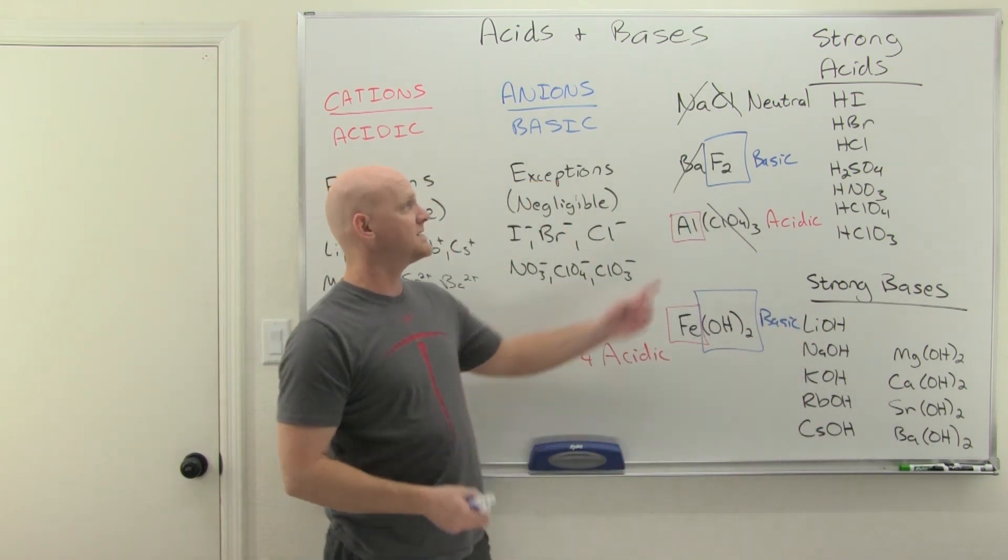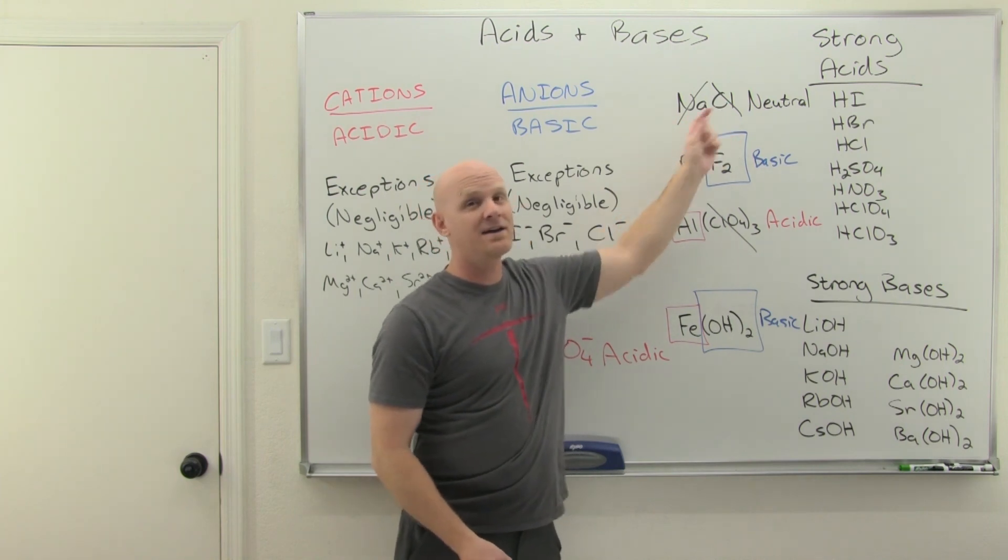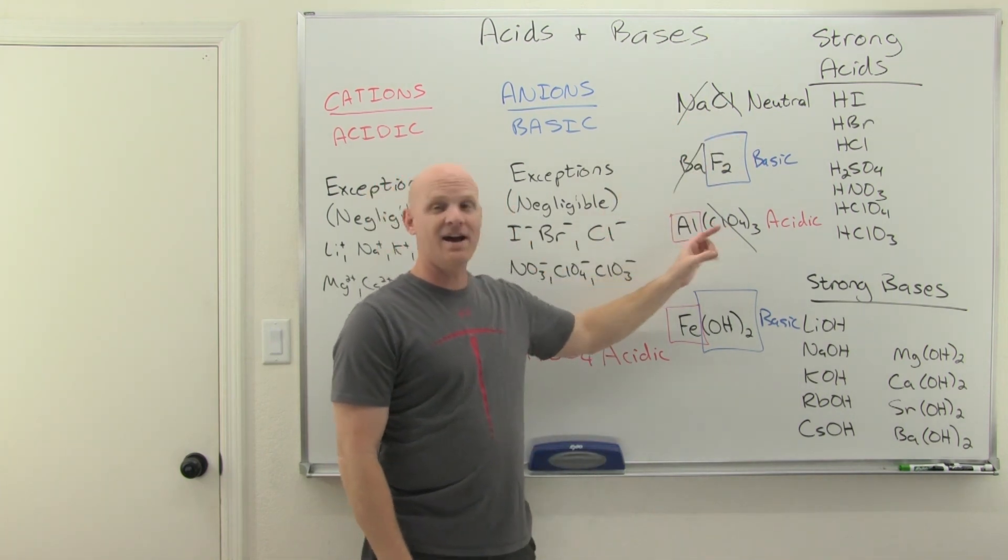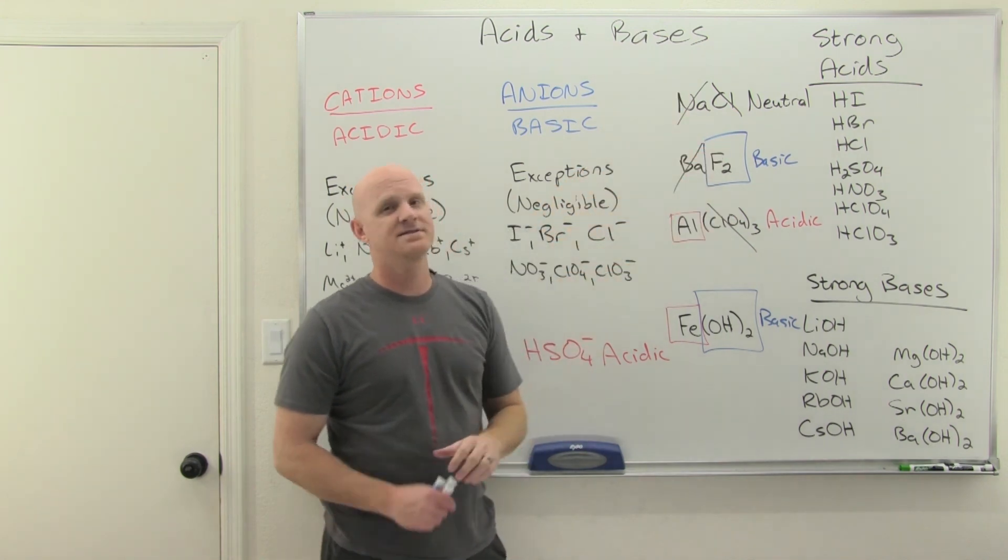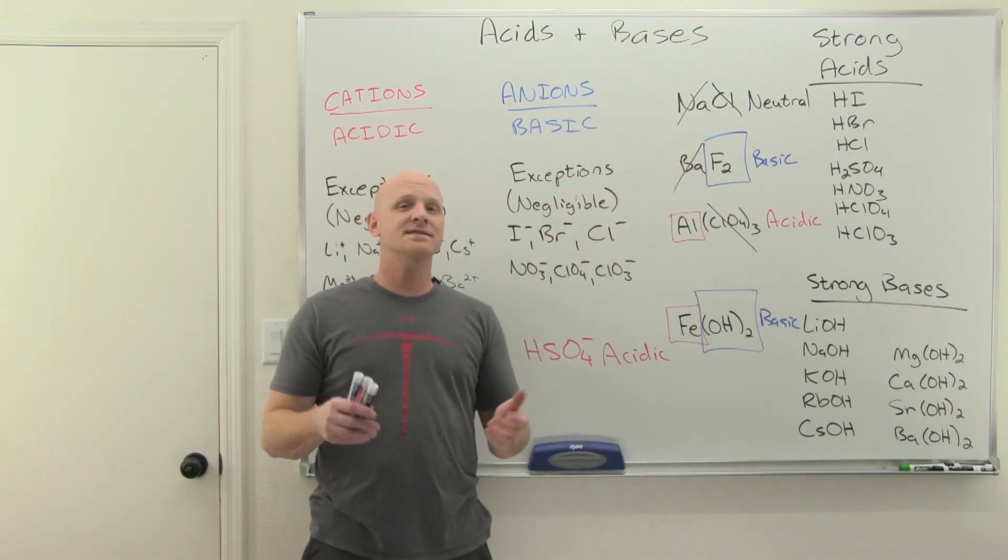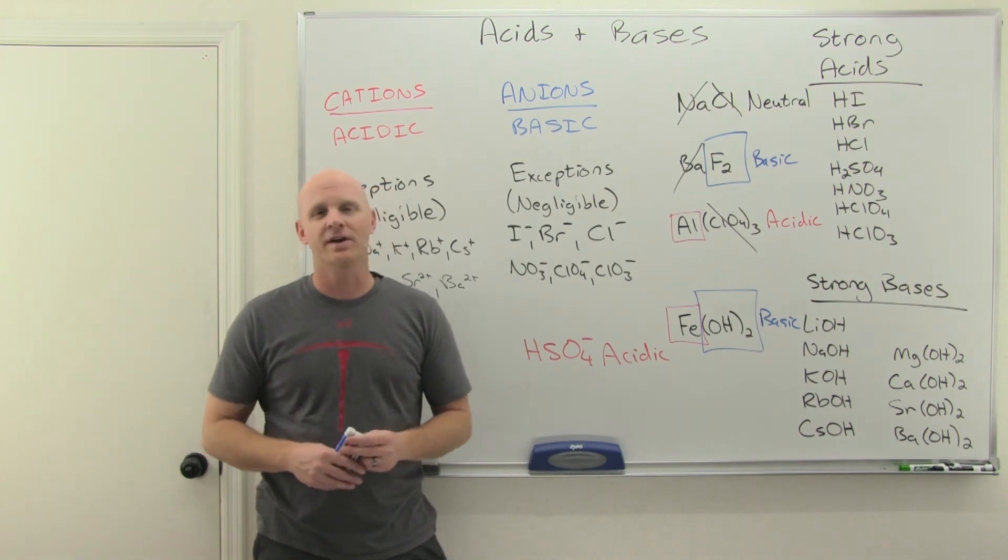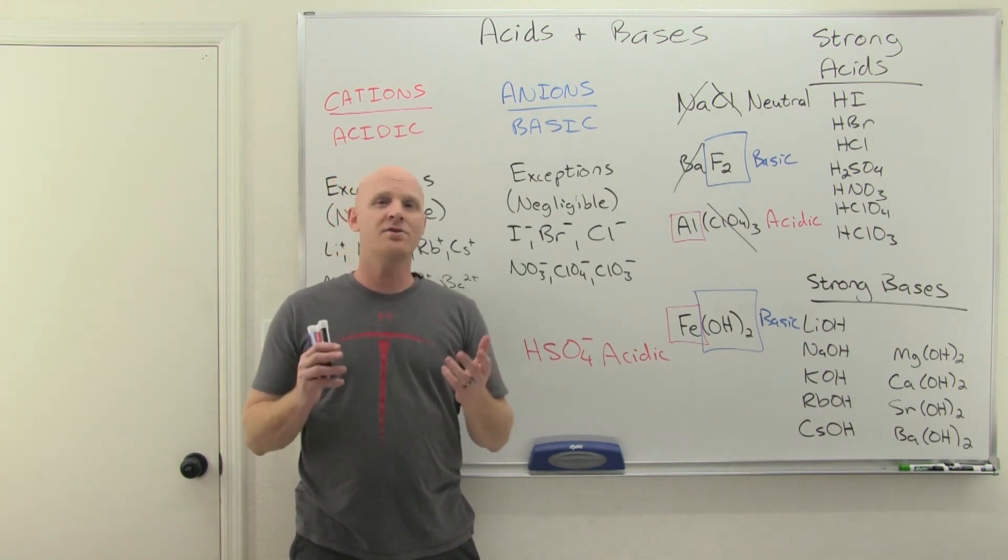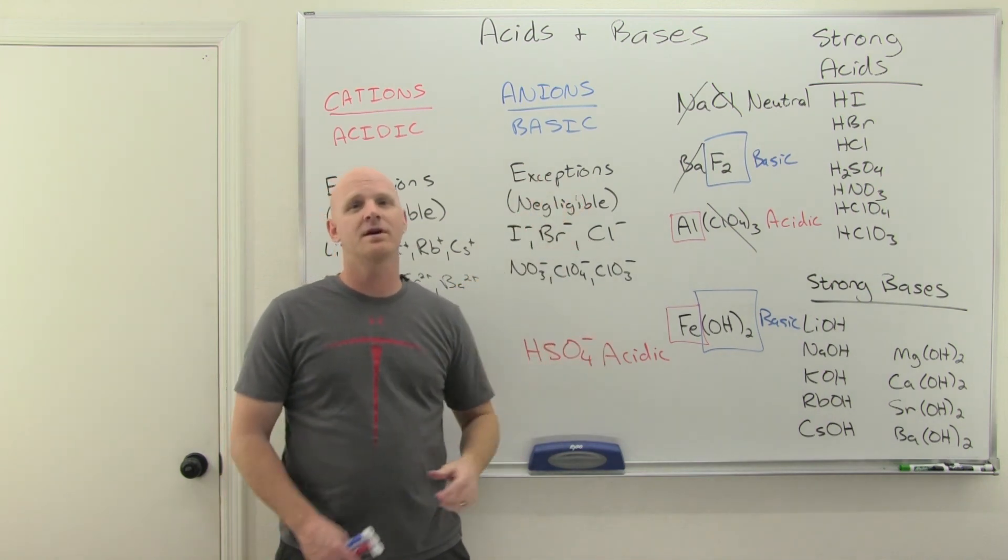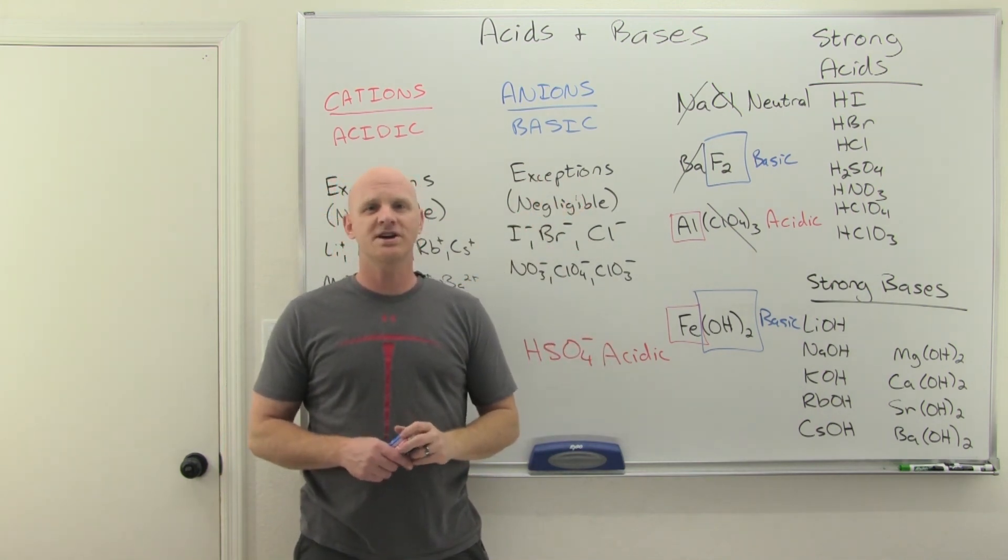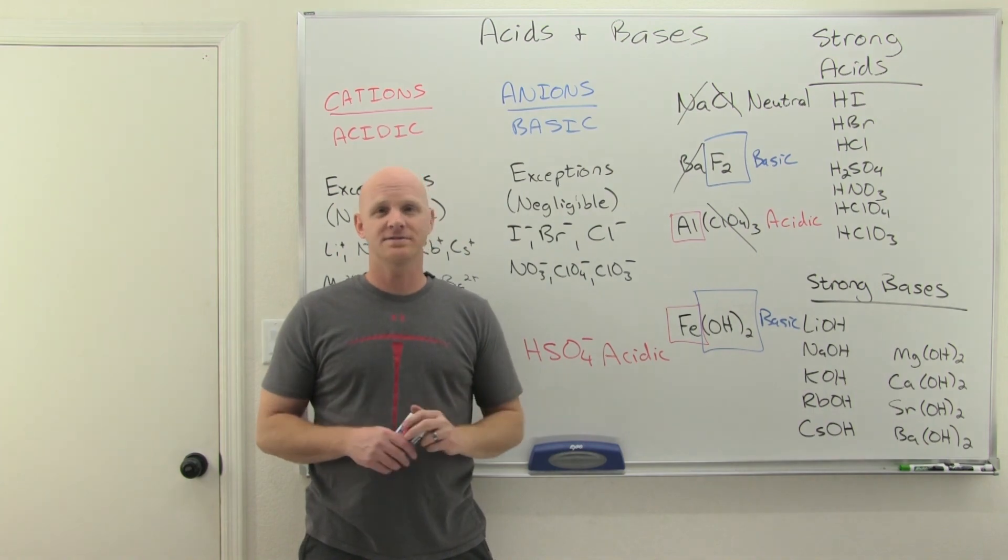Otherwise though, you should expect to either cross off both the cation and the anion, or just the cation or just the anion in designating your salt as either neutral, basic, or acidic. Now, if you have found this lesson helpful, would you consider giving me a like and a share? If you're looking for the study guide that goes with this lesson or practice problems, check out my premium course on chadsprep.com. A free trial is available.